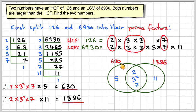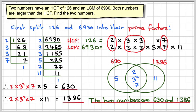One of the numbers is 630, and the other is 1386. This video showed you how to find two numbers from their HCF and LCM, knowing that both numbers are bigger than the HCF. I hope you've understood, and thank you very much for watching.